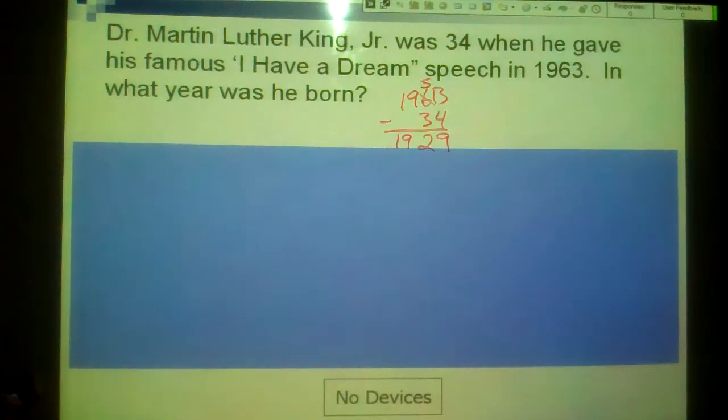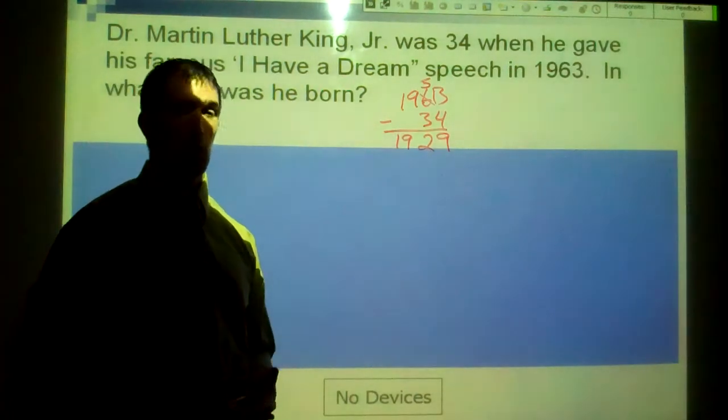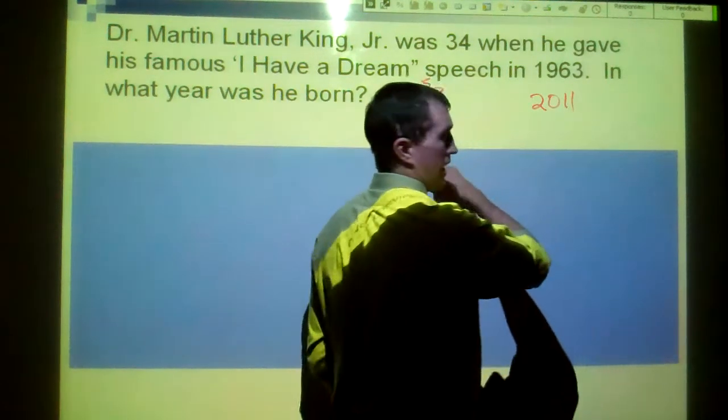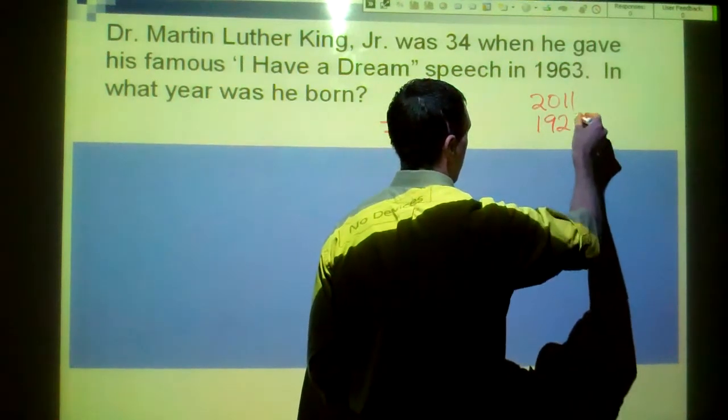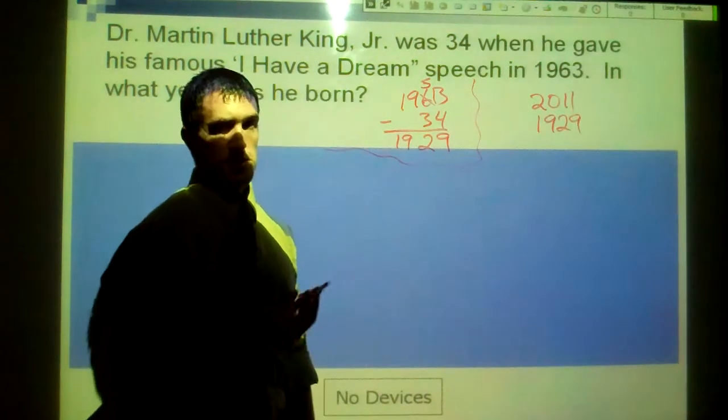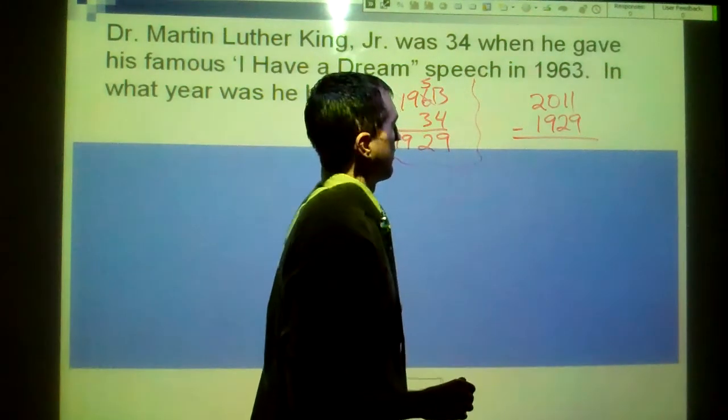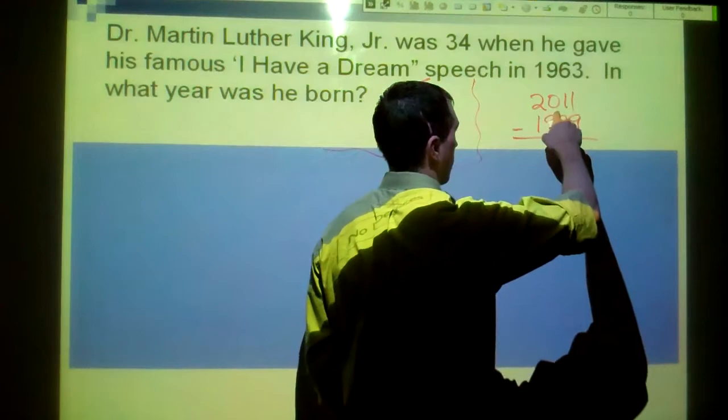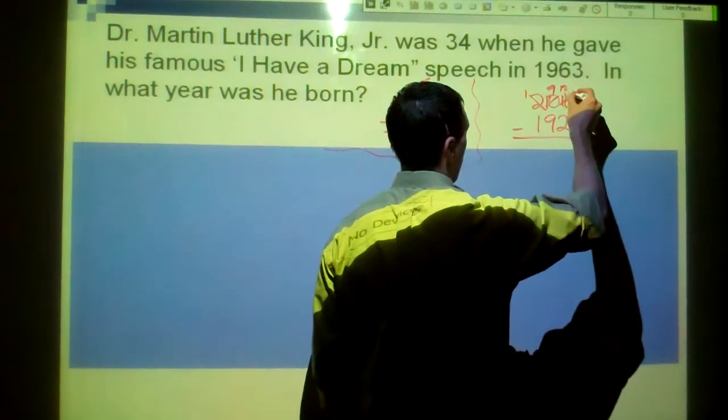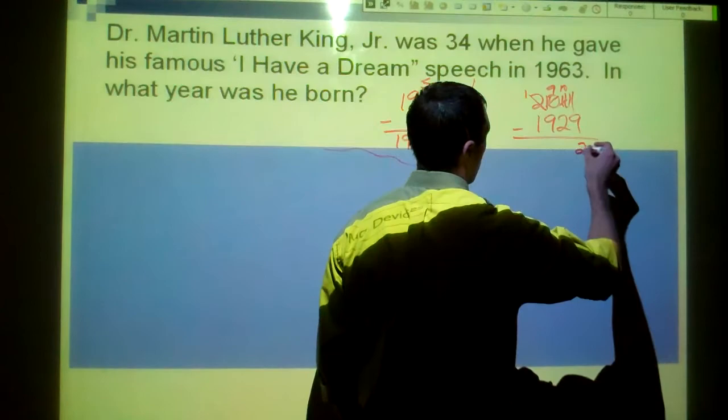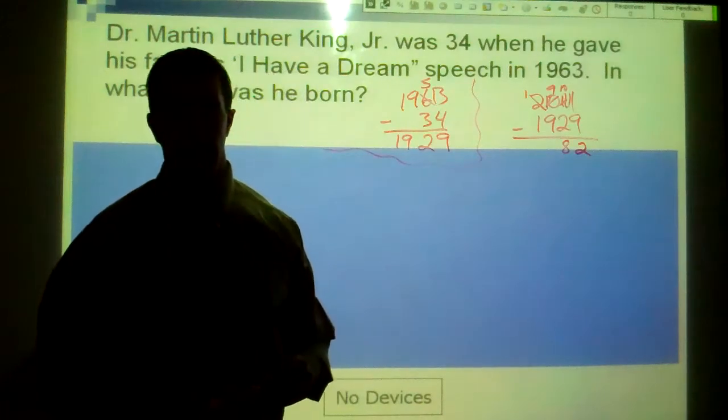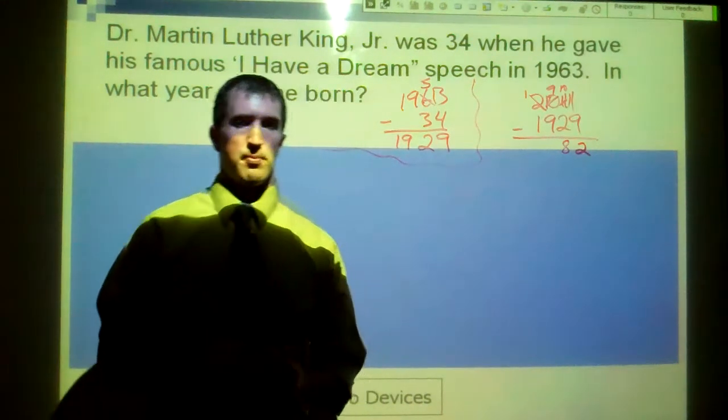1929, that's when he was born. If we wanted to figure out how old he would have been if he was still alive, we would take 2011 minus our 1929. This is kind of a side problem. This is just to see how old he would be. Can't do that. Can't do that. I'm going to borrow here. 11 to 10. 11. 11 minus 9. 2. 10 minus 8. 82. So had he still been alive, he would have been 82 years old today.